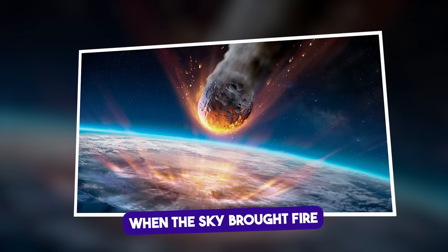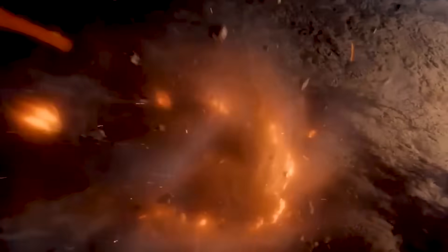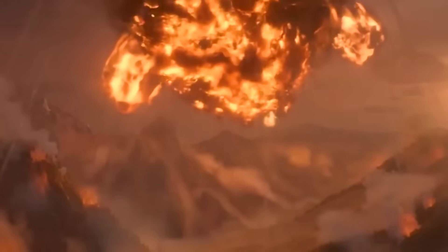When the sky brought fire. 66 million years ago, something came from the sky and ended almost everything on Earth. It was a rock just 10 kilometers wide, but it hit with such force that it unleashed global wildfires, blocked out the sun, and triggered an extinction-level winter.